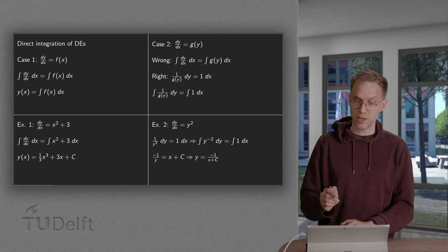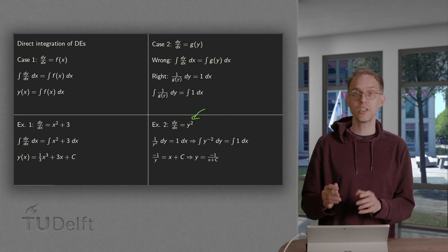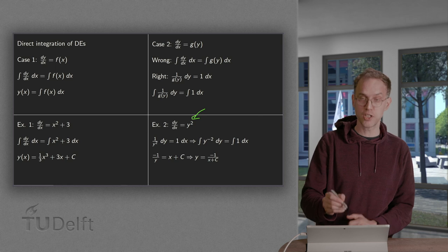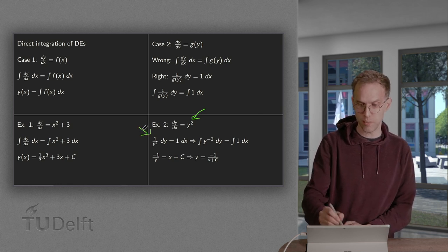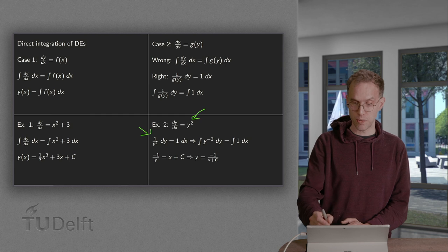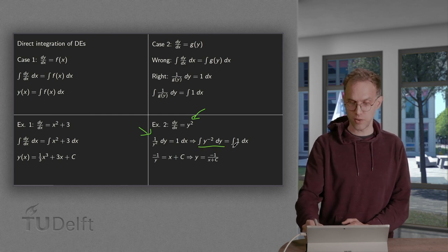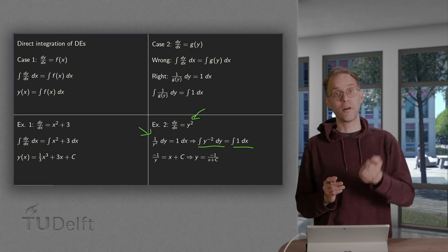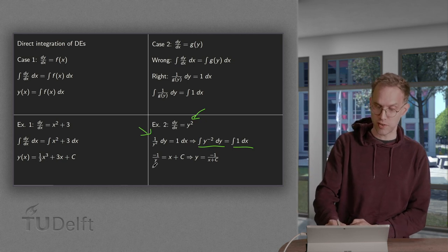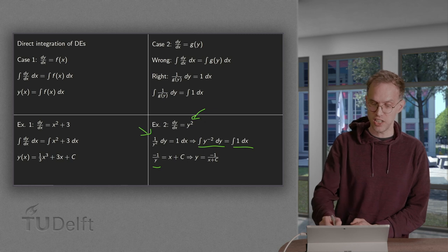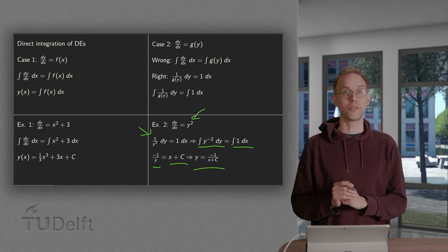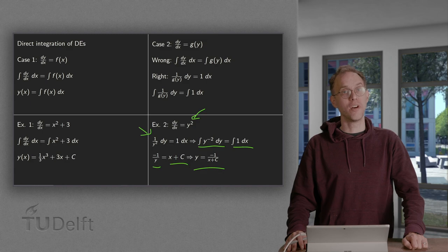Let us look at an explicit example where g(y) = y², so the right-hand side depends only on y. We divide by y² on both sides and multiply with dx to get this expression. We put the integral signs and rewrite y² as y to the power minus 2, with integral of 1 dx on the right. Integrating y⁻² with respect to y gives minus y⁻¹, i.e. minus 1/y. The right-hand side gives x plus a constant. Solving for y: y = -1/(x + C). There we have found our function y(x).